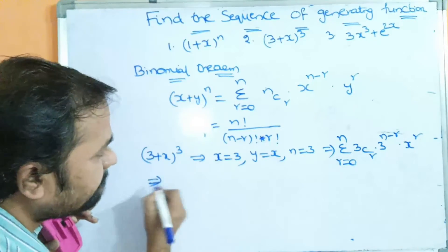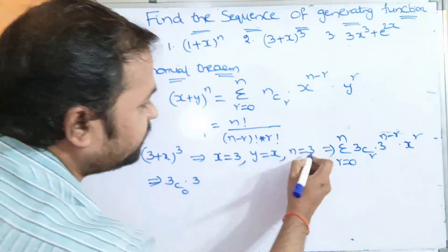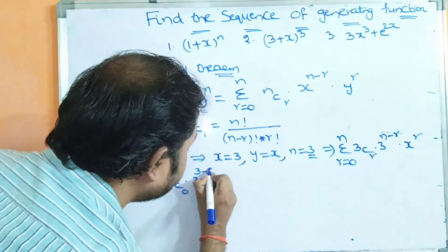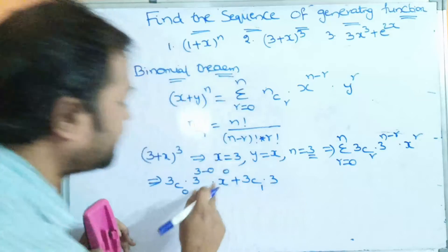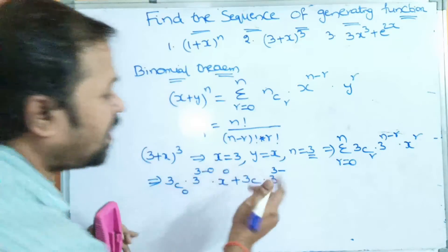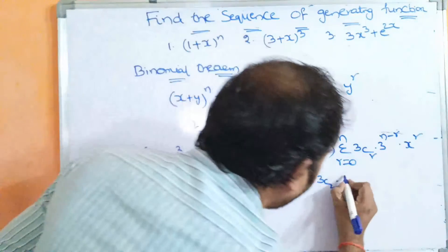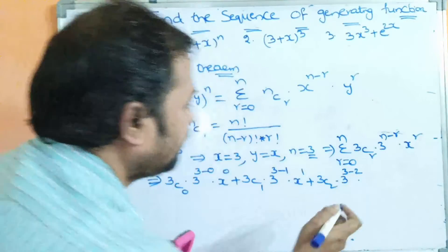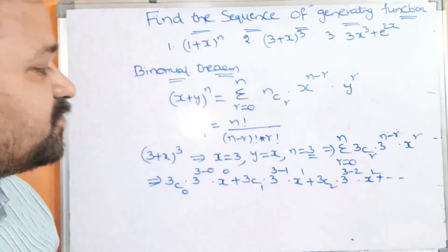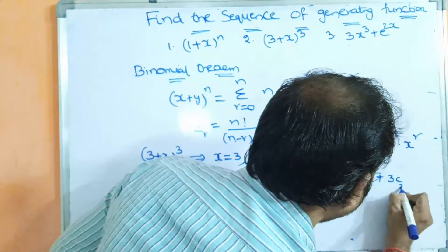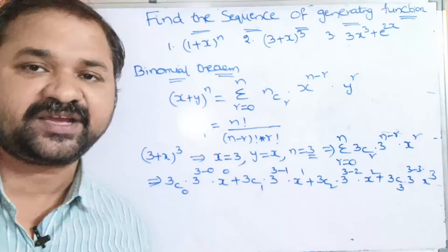Expanding the equation: for r=0 we get 3C0 · 3^3 · x⁰; for r=1 we get 3C1 · 3^2 · x¹; for r=2 we get 3C2 · 3^1 · x²; and for r=3 we get 3C3 · 3^0 · x³.